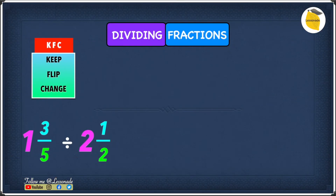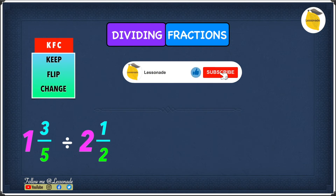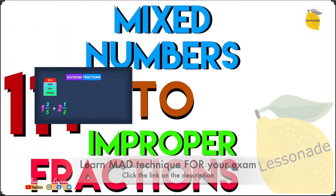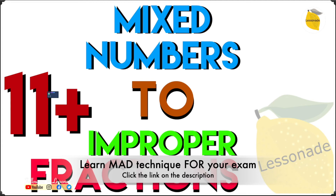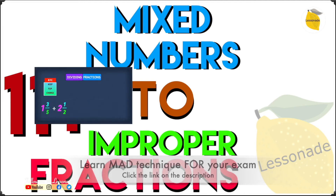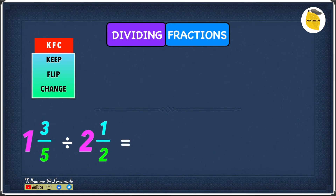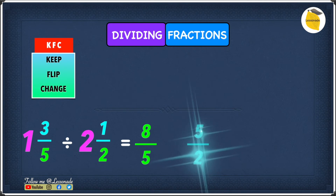Now let's see how to divide fractions for the next example. The example is 1 and 3 over 5 divided by 2 and 1 over 2. As you can see, both of these are mixed numbers. When dividing two mixed numbers, you first change them into improper fractions — I've got a video on that if you need it. So 1⅗ as an improper fraction is 8 over 5, and 2½ as an improper fraction is 5 over 2.